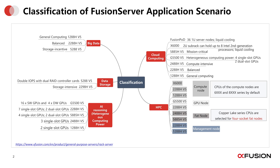For cloud computing, we propose our Fusion Pod and X6000 for rich resources for computing, storage, and network. And for HPC, depending on different demand, we have a full range of rack servers for different nodes, such as compute node, GPU node, FAT node, and management node, and we'll discuss these in detail later.